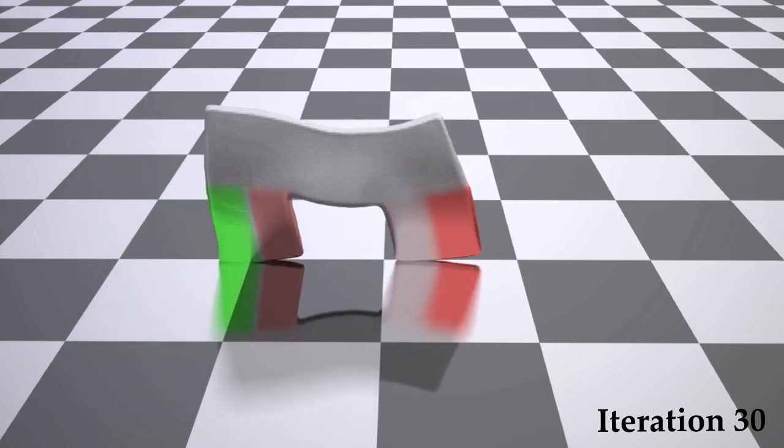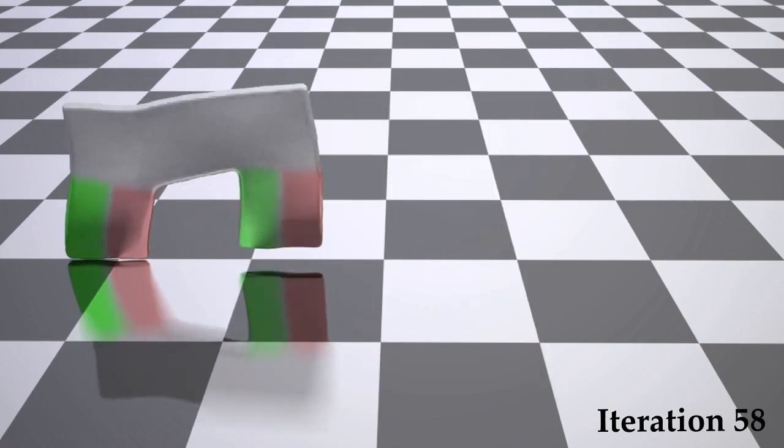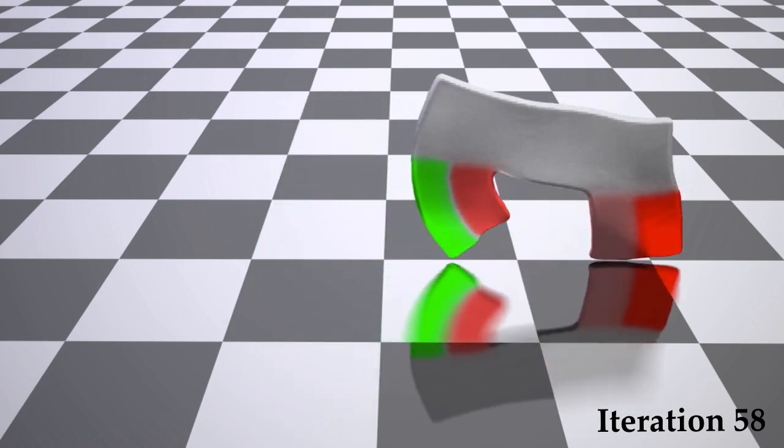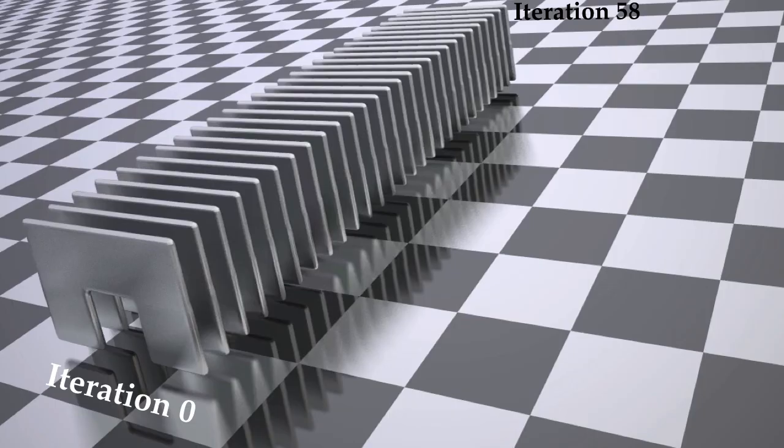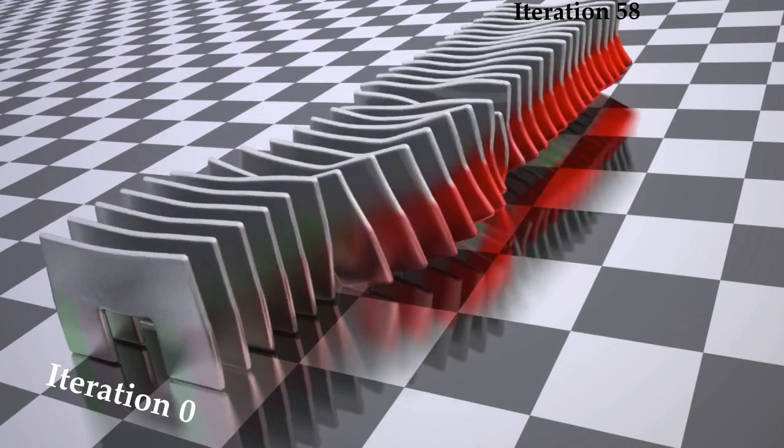After 30 iterations, the controller makes it move slowly. The optimization fully converges in 58 gradient descent iterations. Here we visualize the whole optimization process, from the initial guess to the 58th iteration.